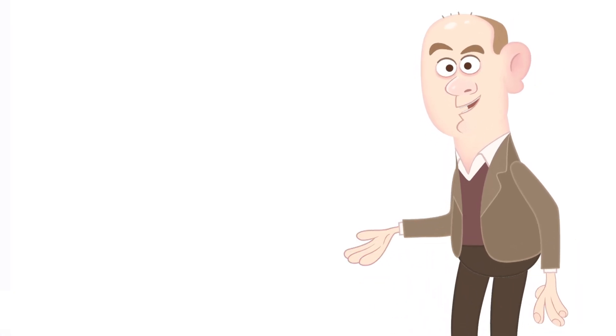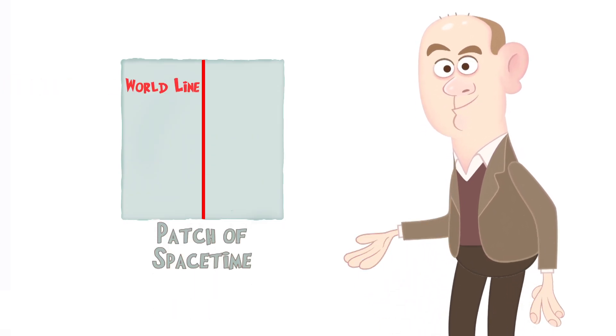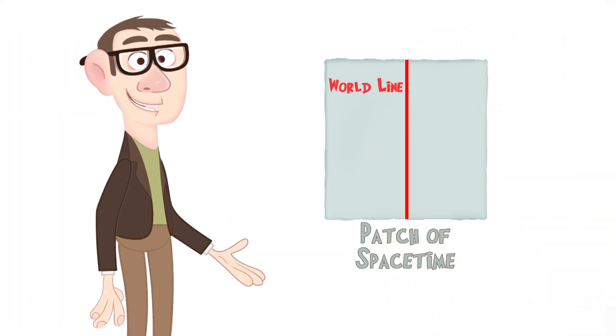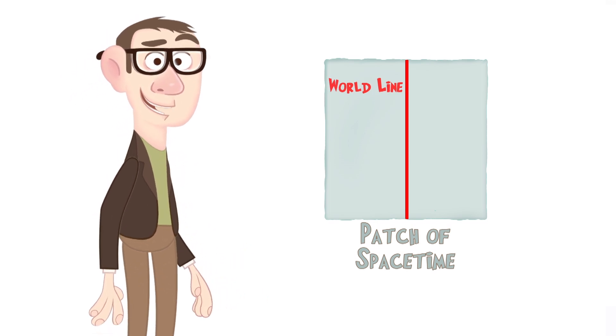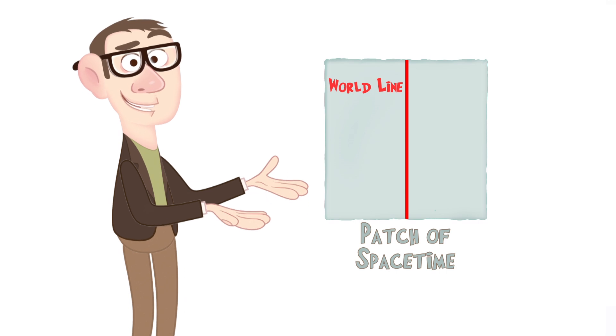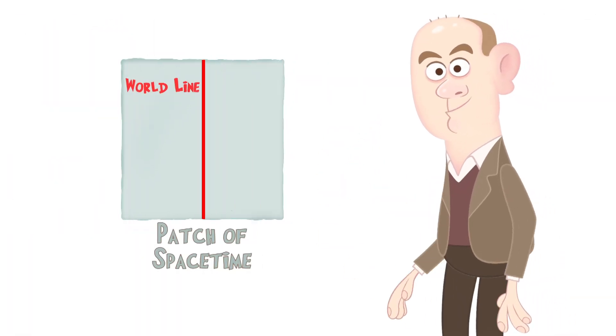Until now, we've been dealing with things moving at constant speeds, with straight world lines in spacetime. But once you add gravity, if you measure a speed at one moment, then again, a bit later, the speed may have changed. In other words, as I've discovered, gravity causes acceleration.